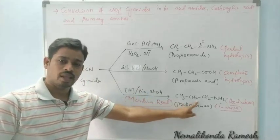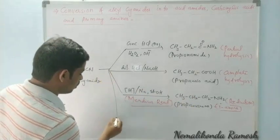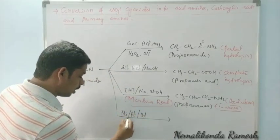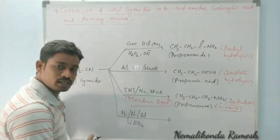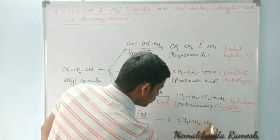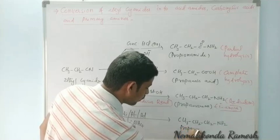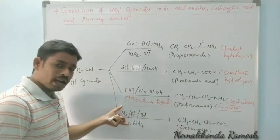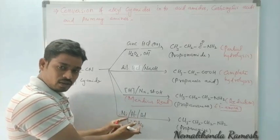You can also use nickel, platinum, palladium, or lithium aluminum hydride as reducing agents. In the presence of these agents, we also get CH₃CH₂CH₂NH₂, propylamine, which is a primary amine. Addition of hydrogen in the presence of these catalysts is called hydrogenation.